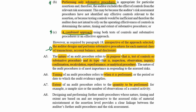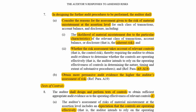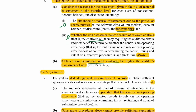You must determine the nature — its purpose (test of control or substantive) and its type (how it's going to be performed) — the timing (when it's going to be performed), and the extent (quantity to be performed). In designing further audit procedures, you have to consider the risks: the likelihood of material misstatement due to its characteristics, so the inherent risk, and then the assessment of the controls, so the control risk. You obtain more pervasive audit evidence the higher the auditor's assessment of risk.